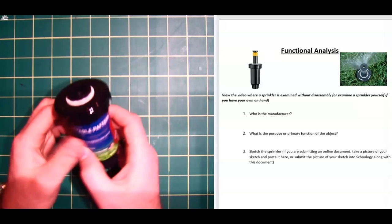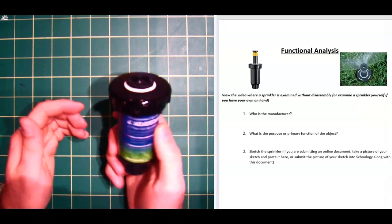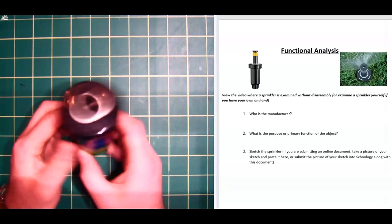So what we have here is a dollar sprinkler that you can get at Lowe's, and we're going to be performing a functional analysis on it.